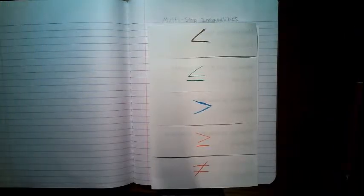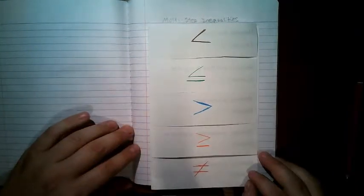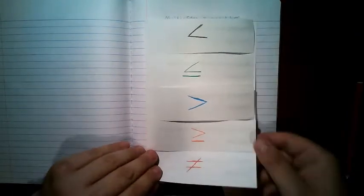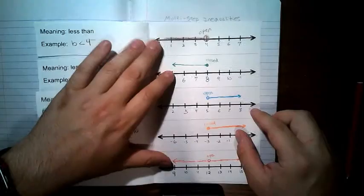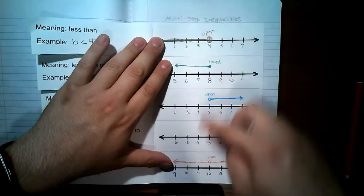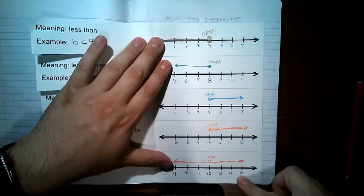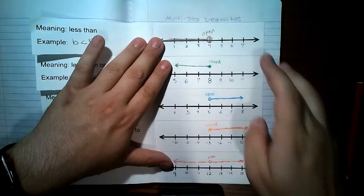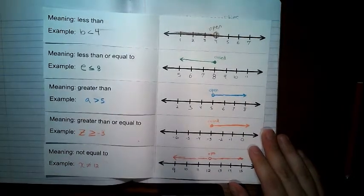Go ahead and tape or glue this foldable into your interactive notebook. Open it up and put a piece of tape along the top, the bottom, and even the side if you want, so that it stays in place but still flips open.